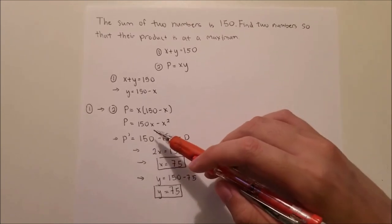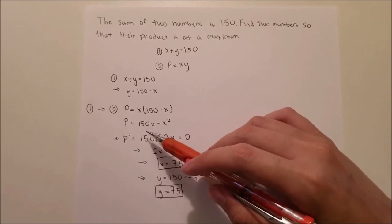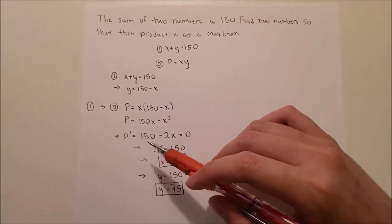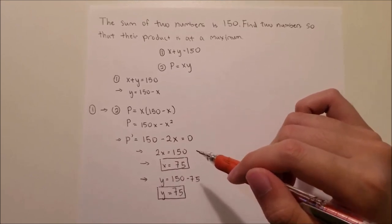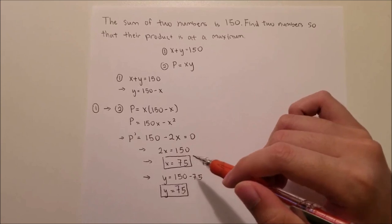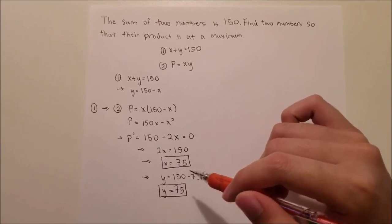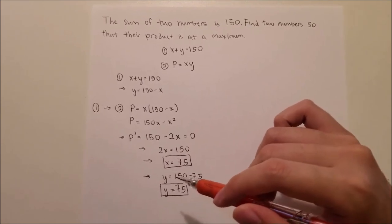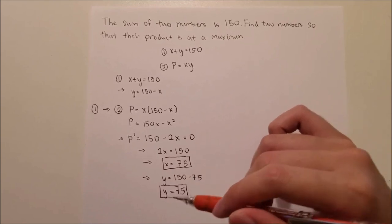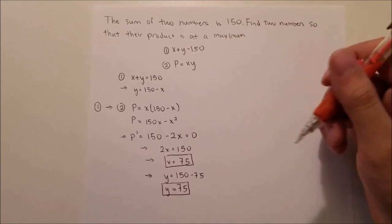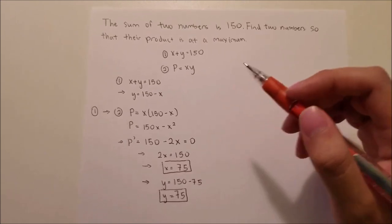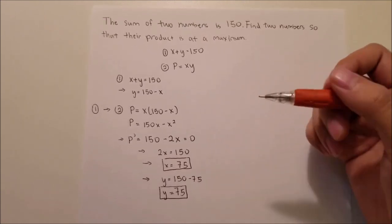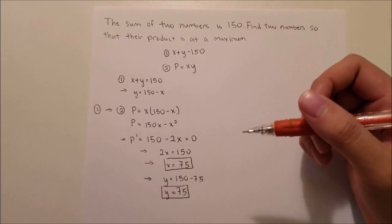In this case, if we take the derivative of p, you'll get p prime equals 150 minus 2x. And you set that equal to zero to find the critical point. So 2x equals 150 and x equals 75. And plugging it back into the relationship with y, you get y also equals 75. And when x equals 75 and y equals 75, then the product of these two numbers is at a maximum, and they still add up to 150.